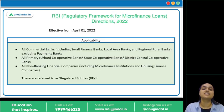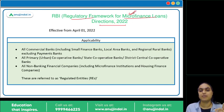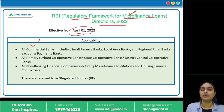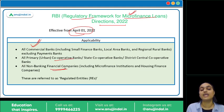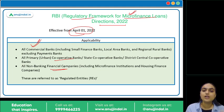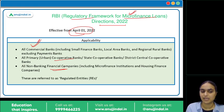RBI has now released the Regulatory Framework for Microfinance Loans Directions, applicable from 1st April. These directions apply to all commercial banks — including small finance banks, local area banks, and regional rural banks — but excluding payment banks. Cooperative banks and NBFCs, including housing finance companies and NBFC-MFIs, are also covered. All these entities are referred to as 'regulated entities' under these directions.